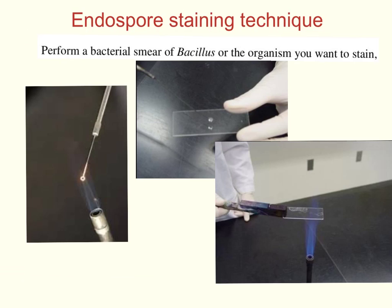To prepare the smear: sterilize your flame loop either with a sterilizer or Bunsen burner, then let that loop cool. Place your bacteria sample on your slide, then heat fix the bacteria to the slide. If needed, refer to my previous video on heat fixing bacteria for how to complete this step.